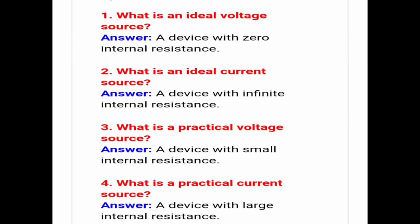First, what is an ideal voltage source? A device with zero internal resistance — that is an ideal voltage source. Second, what is an ideal current source? A device with infinite internal resistance.